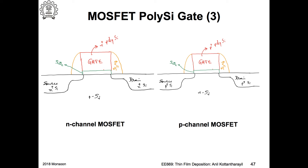For aluminum the segregation coefficient is very high and solid solubility is low; gallium diffuses very fast and so on. So you do not use any of them — you use boron. Now when you use boron, arsenic and phosphorus are implanted as arsenic or phosphorus ions, but in the case of boron it is a very lightweight element.